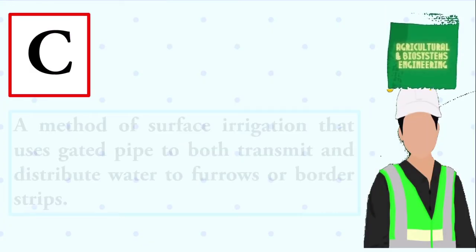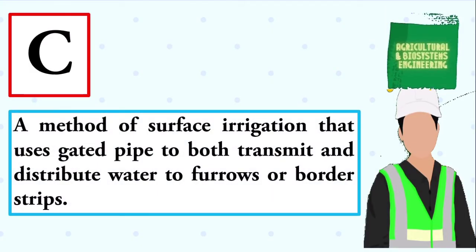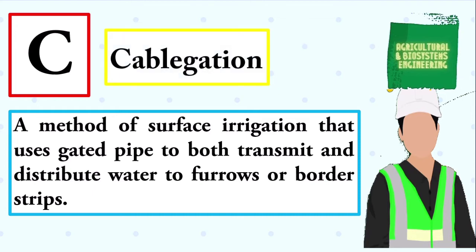A method of surface irrigation that uses gated pipe to both transmit and distribute water to furrows or border strips. The answer is cobalgation.